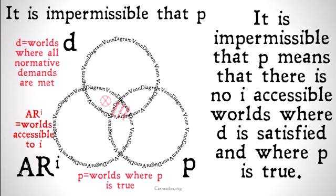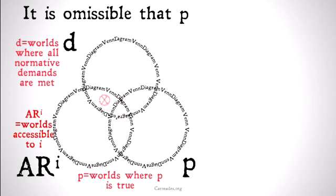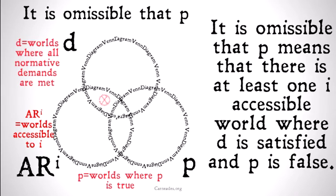It's impermissible that P, on the other hand, means that there is no I-accessible world where D is satisfied and where P is true. We put the little X in there because there has to be at least one I-accessible world. But it is impermissible that P means none of the worlds that are both D and ARI — that have all normative demands met and are accessible to I — are going to be worlds where P is true. And finally, it's omissible that P means there's at least one I-accessible world where D is satisfied and P is false.